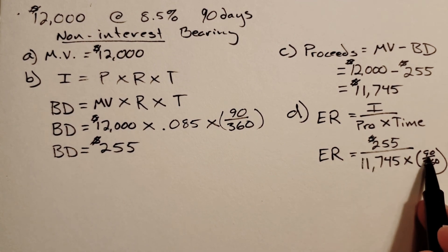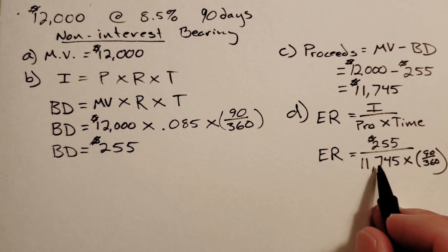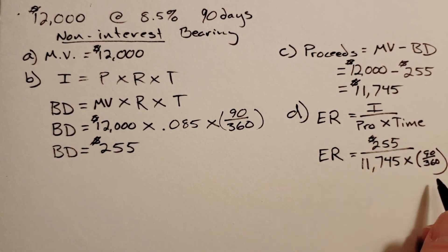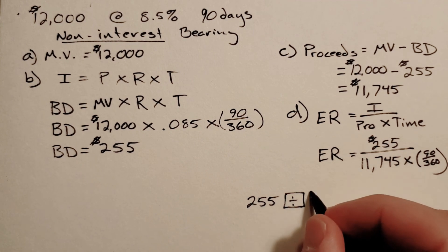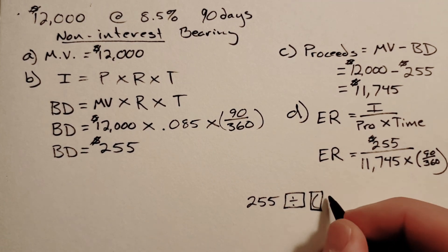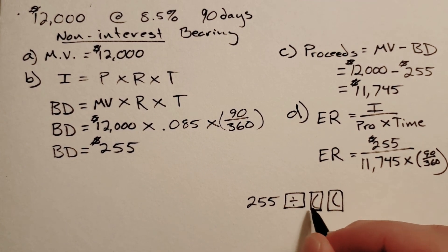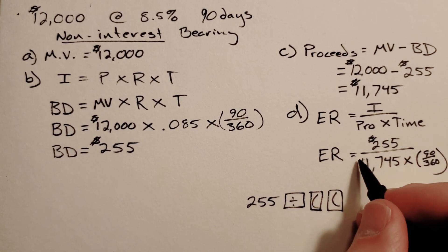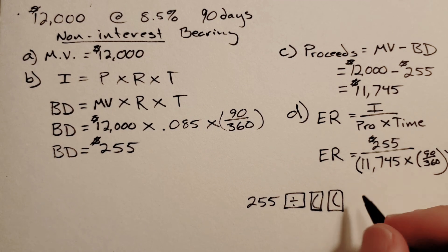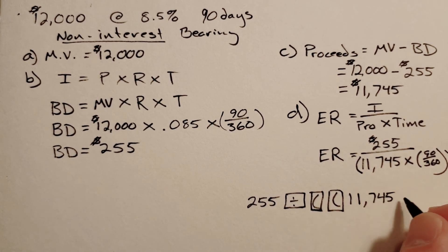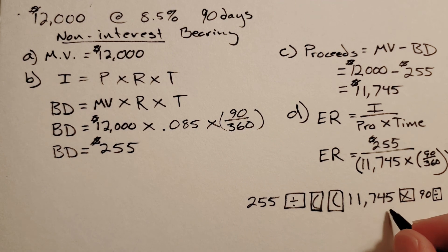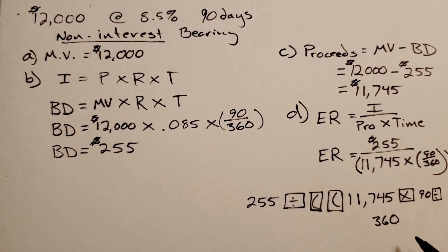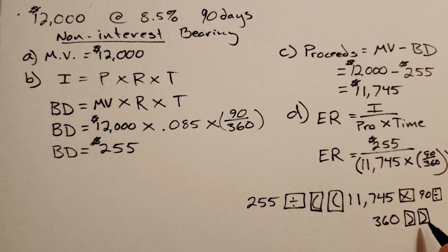I'm going to put that in parentheses because what we have going on is we have some division, some multiplication, and some more division. If I'm typing this into my calculator, I'll show you how I write it out. I'm going to do 255, then the division sign, then a parentheses button - this is your open parentheses button. I'm putting this whole bottom portion in parentheses. Then I'll type in $11,745, my times button, then 90, divided by 360, then close the parentheses twice.